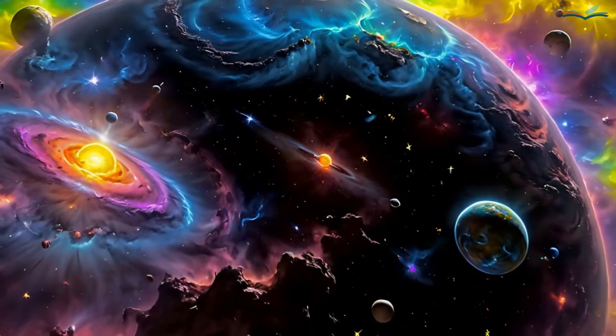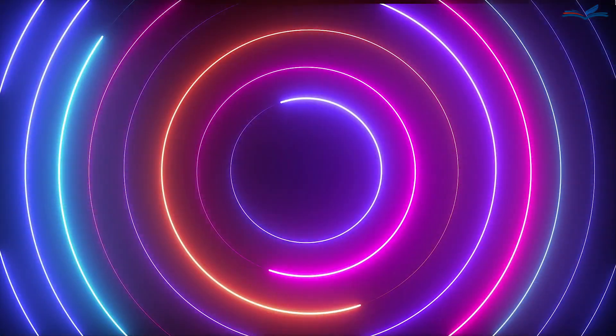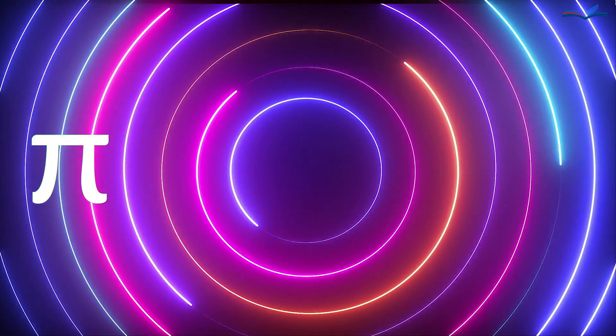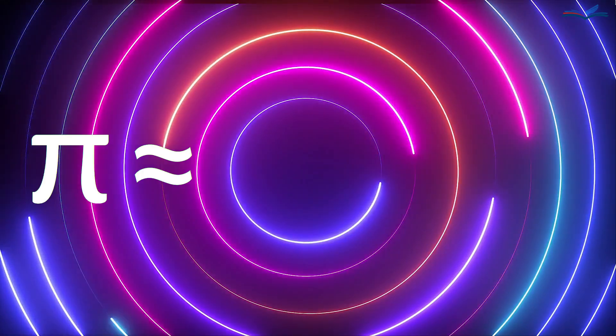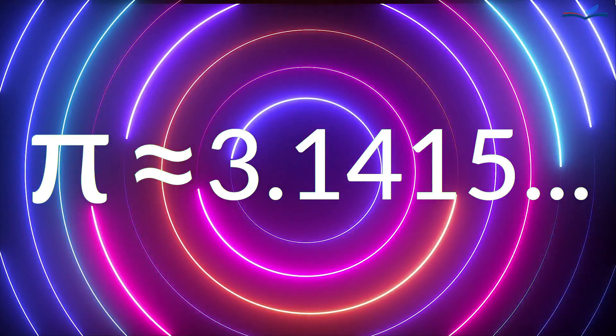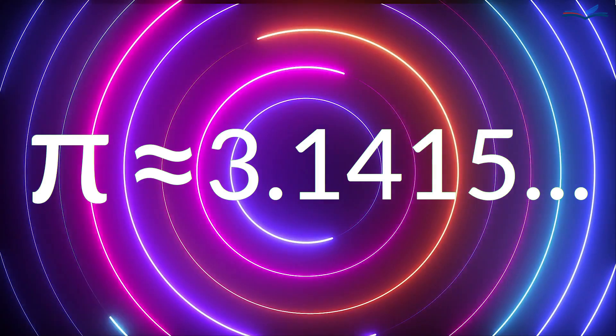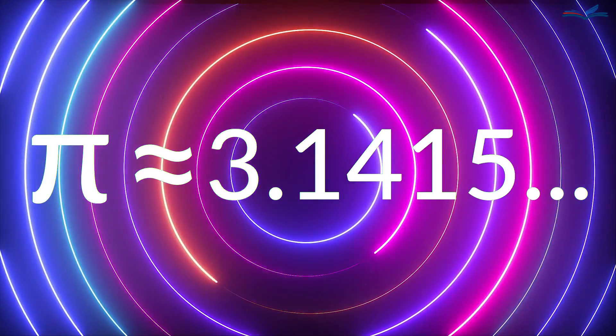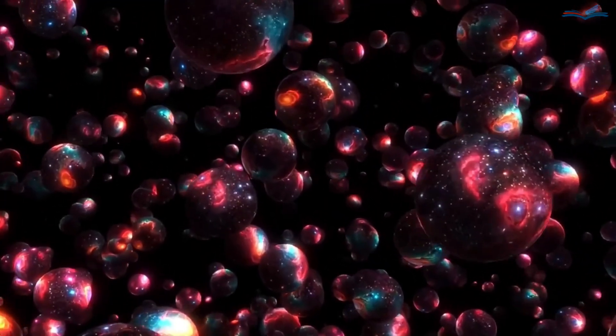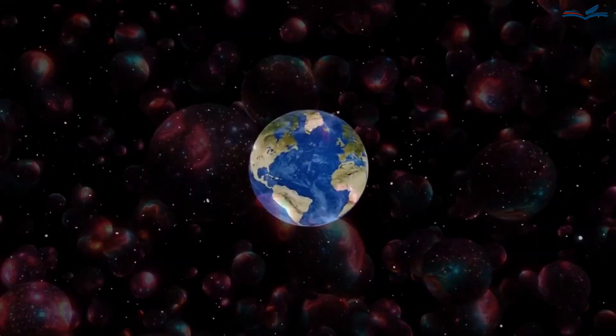But what if pi is only slightly different from the current value, say starting from digits after the position 762? Would it really matter? Probably not. Such a universe would likely be nearly identical to ours, with no noticeable changes in the laws of physics or the geometry of things humans can perceive.